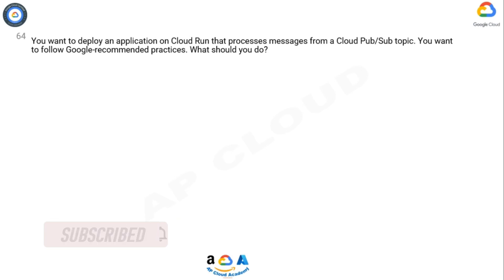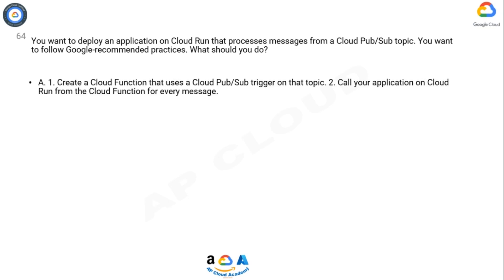You want to deploy an application on Cloud Run that processes messages from a Cloud Pub/Sub topic. You want to follow Google recommended practices. What should you do? Option A: 1) Create a Cloud Function that uses a Cloud Pub/Sub trigger on that topic. 2) Call your application on Cloud Run from the Cloud Function for every message.